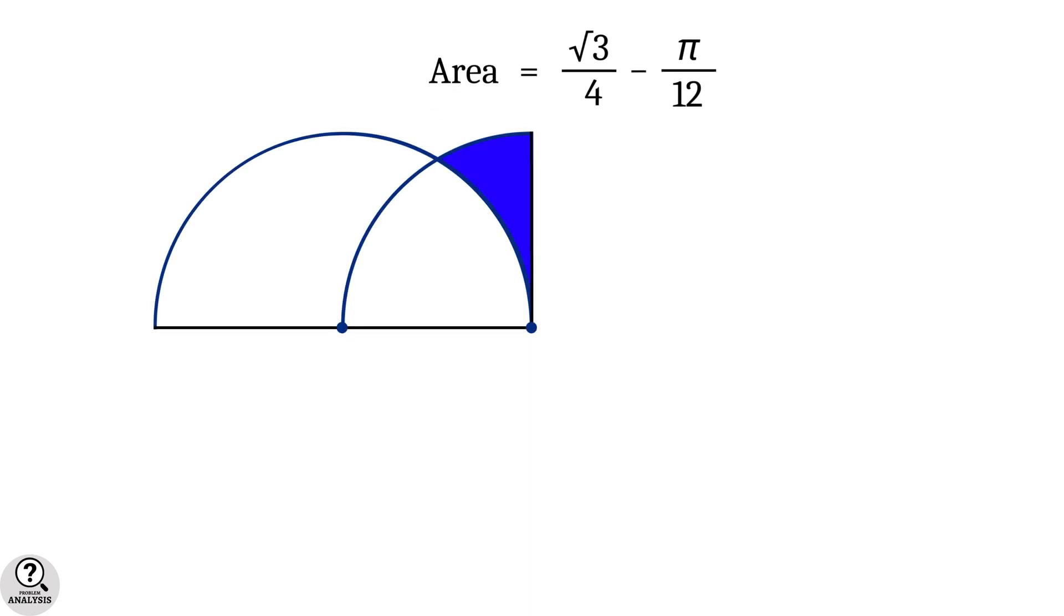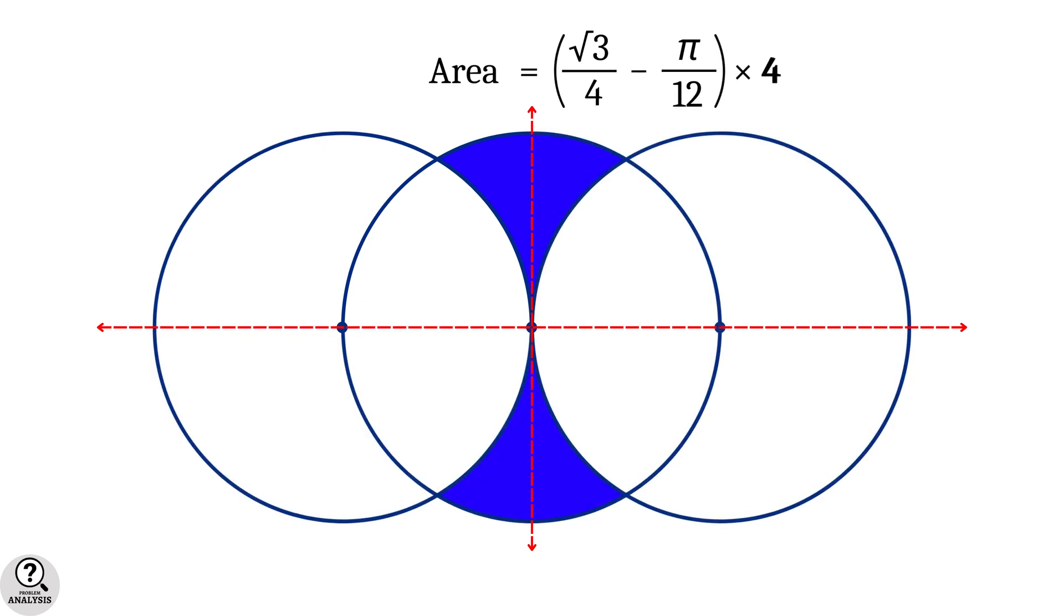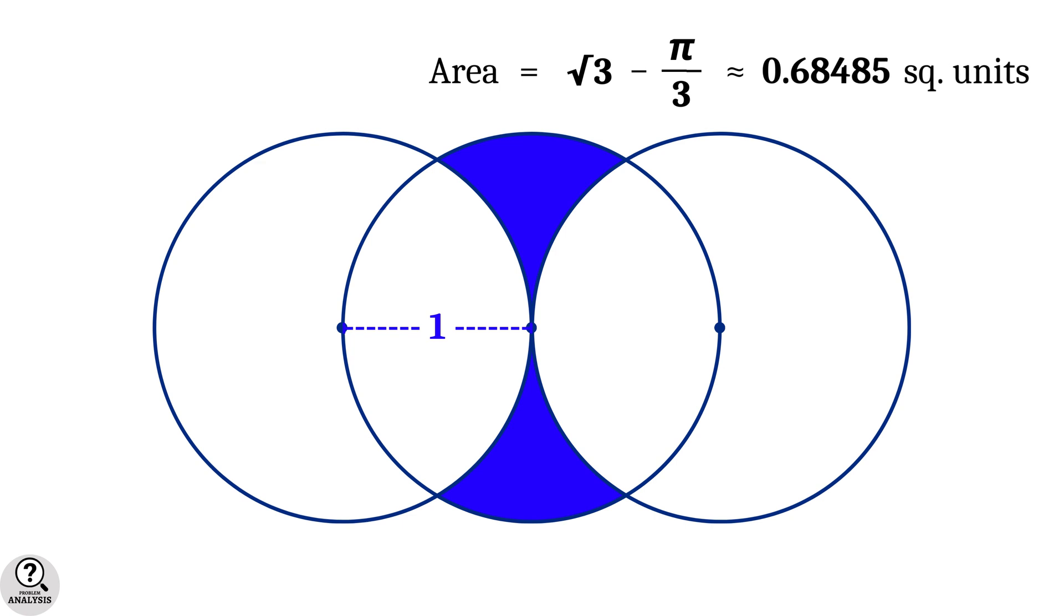Now we have the area of just 1 fourth part of the whole figure. So the total area is 4 times the area that we have, and that is equal to root 3 minus pi by 3 square units. This value is approximately equal to 0.68485 square units. And that is the solution we are looking for.